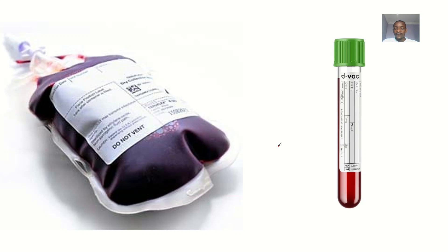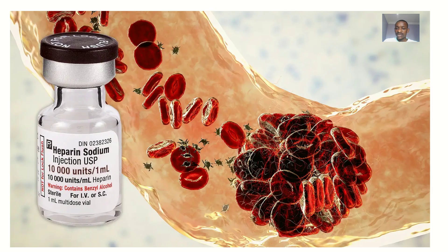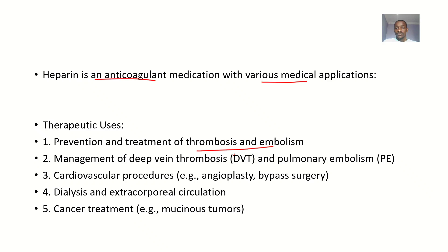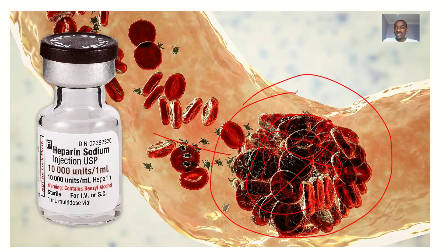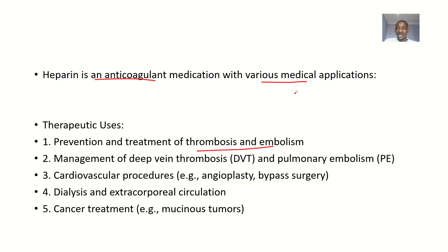What is thrombosis? It is the formation of blood clots. So if blood is clotting somewhere and you want those clots to break off, you apply heparin. Embolism is when blood clots and eventually blocks the whole blood vessel. Heparin helps to liquefy the blood again and keep it in circulation. It also helps in the management of deep vein thrombosis and pulmonary embolism.